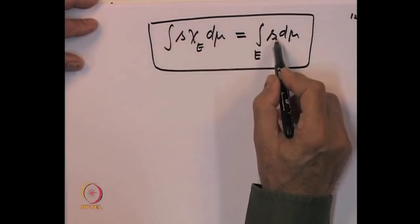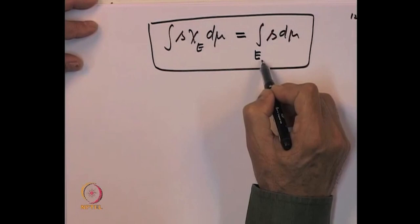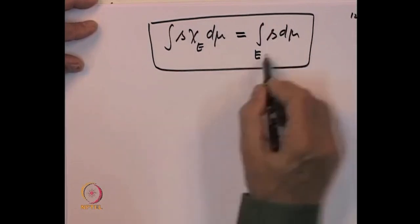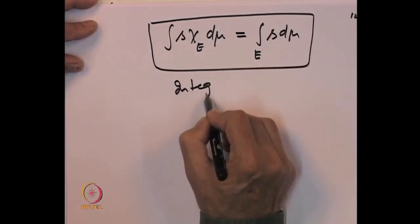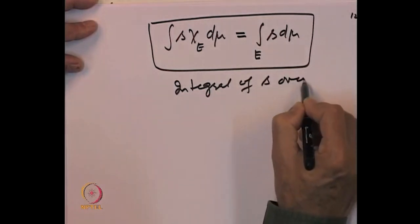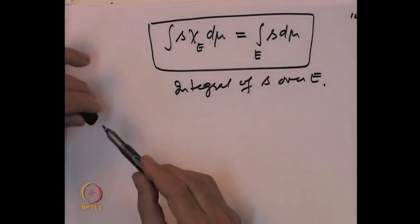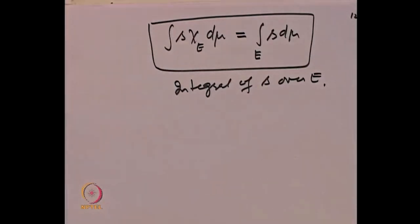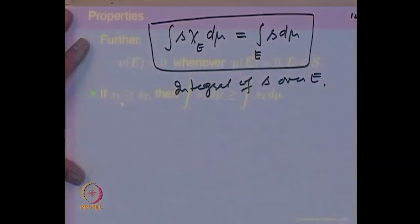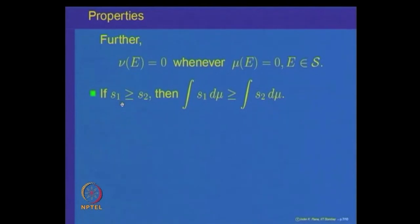The integral of S over the set E is the notation we use for integral of S chi_E d mu. Next property: if S_1 is greater than or equal to S_2, then integral of S_1 d mu is greater than or equal to integral of S_2 d mu.